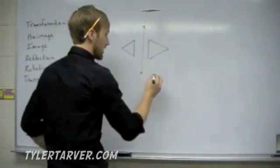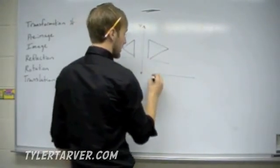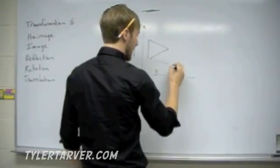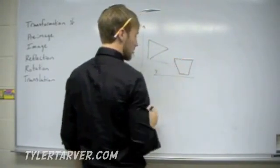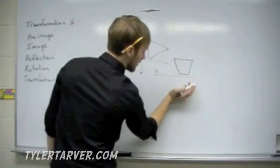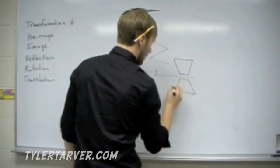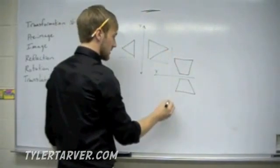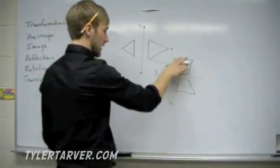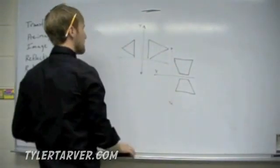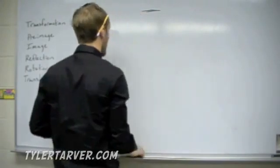You can reflect a shape over the y-axis or over the x-axis. Say we had a trapezoid here — if we reflected it over the x-axis, we'd look at what it looks like on the other side. That's reflection over the x-axis. Reflecting over the y-axis works the same way.